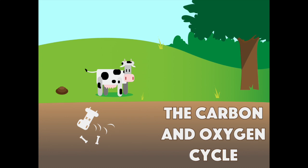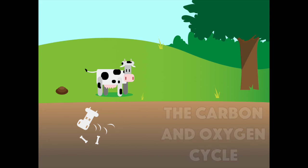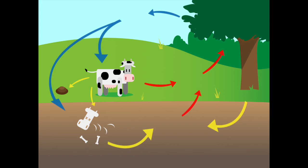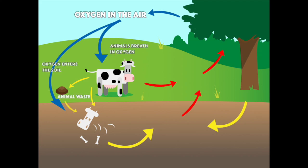The Carbon and Oxygen Cycle. Let's begin with oxygen. Oxygen is a gas found in the air. From the air, oxygen makes its way into soils and waters of the earth.